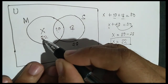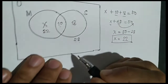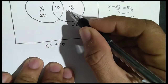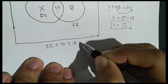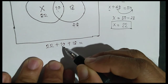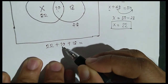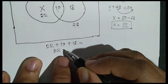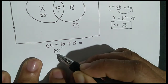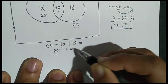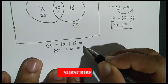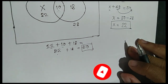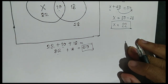So the value of X is 22. Therefore, we can place 22 in our diagram. If we add 22 plus 10 plus 18: 22 plus 10 gives you 32, plus 18 gives you 50. So there are 50 students. That's how simple it is.